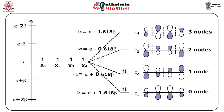The ground state configuration is therefore (1AU)²(1BG)², and since everything is completely filled, the electronic state is a singlet AG state. When you excite an electron from the HOMO to the LUMO, you get the configuration (1AU)²(1BG)¹(2AU)¹. There are two spin states possible — singlet and triplet — and BG × AU = BU, giving states ¹BU and ³BU.